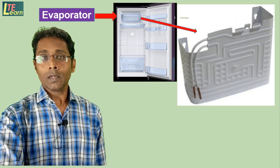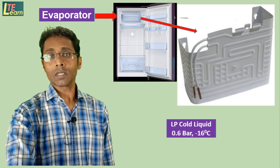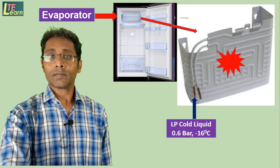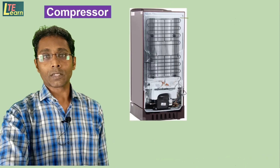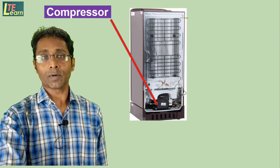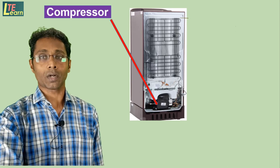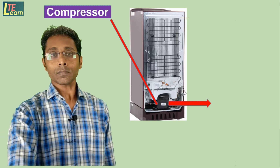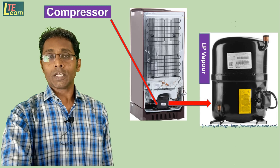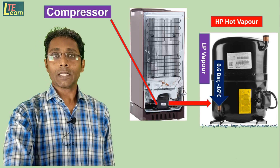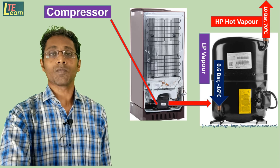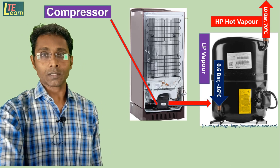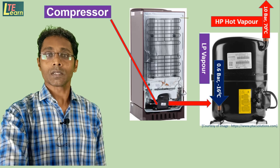The evaporator is situated at the freezer section. When this low-pressure liquid refrigerant passes through the evaporator coil, it absorbs heat and changes phase — it becomes vapor. This vapor then goes to the compressor, which is situated at the back side of the refrigerator at the bottom level. The function of the compressor is to increase the pressure of the refrigerant. The low-pressure vapor is converted into high-pressure vapor, its temperature also increases above the atmosphere, meaning its thermal energy level is increased, making it possible to reject heat from this vapor refrigerant.